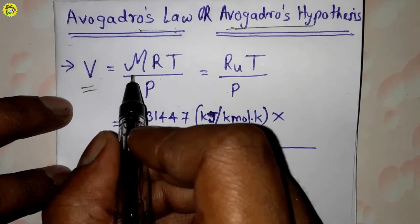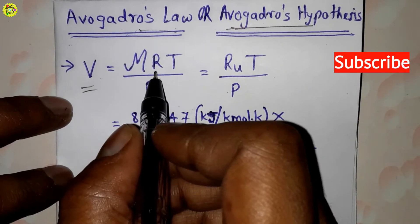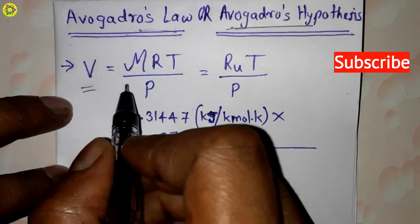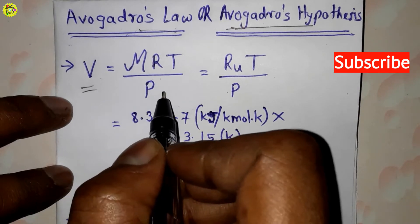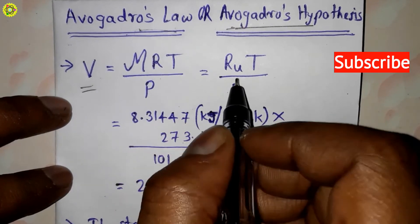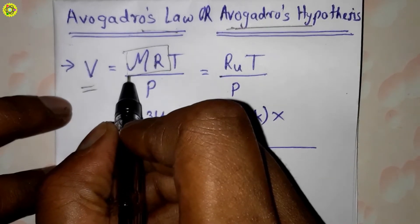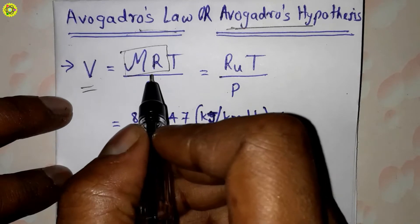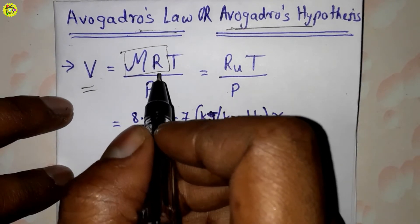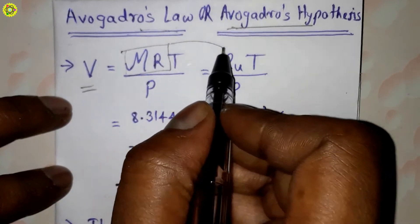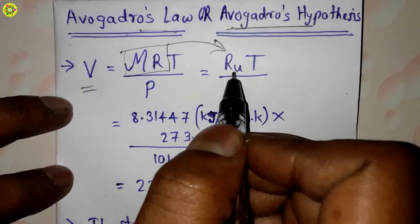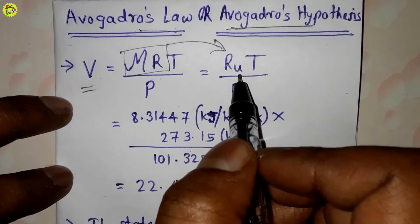calculated by molecular mass into characteristic gas constant into temperature upon pressure, which is equal to R. And this term, molecular mass into R (the characteristic gas constant), is actually Ru, the universal gas constant. So here